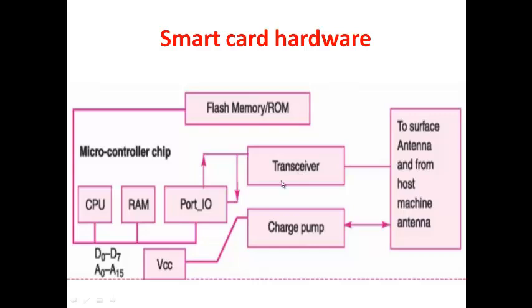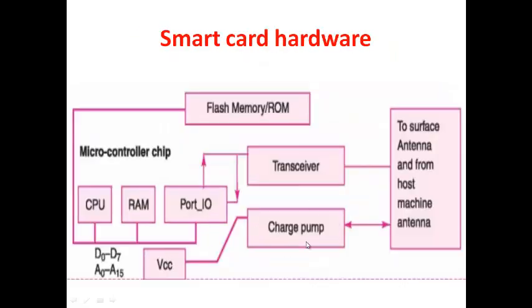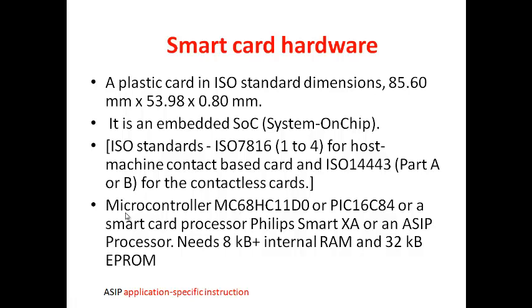The transceiver performs synchronous serial communication. Power is supplied through the VCC pin, which feeds the charge pump — an amplifier circuit that boosts voltage to the required level. Flash memory is used only by the bank at the time of card issuance to write your account number and personal details; after issuance, only RAM and CPU are accessible.